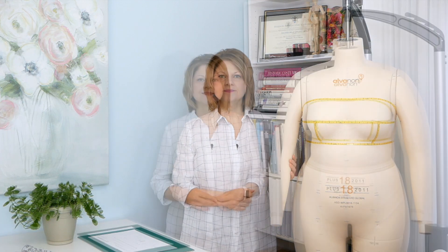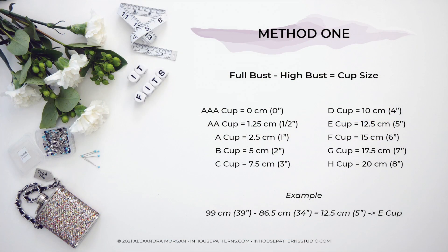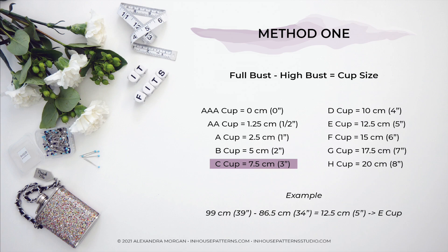The first method is the one most sewists are familiar with. Take your full bust girth measurement and subtract your high bust girth measurement from it. A 2.5 centimeter difference gives you an A cup, a 5 centimeter difference gives you a B cup, a 7.5 centimeter difference results in a C cup, and so on — with each cup size increasing by 2.5 centimeters or one inch per cup size.